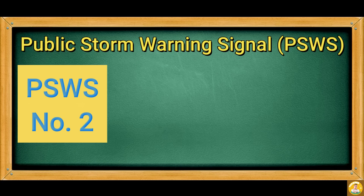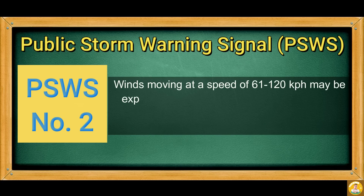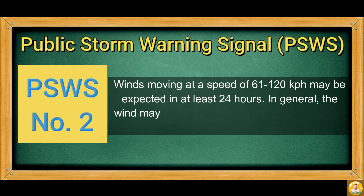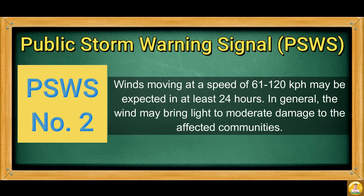PSWS Number 2: Winds moving at a speed of 61 to 120 km per hour may be expected in at least 24 hours. In general, the wind may bring light to moderate damage to the affected communities.